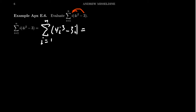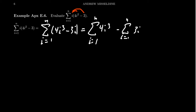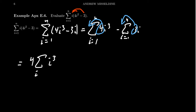We take the sum as i goes from 1 to n. Just like with derivatives, where you break a polynomial up into pieces, we can break this up into a difference: the sum of 4i³ minus the sum of 3i, each as i goes from 1 to n. We then factor out the constant multiples — factor out 4 and factor out 3 — because sigma is a linear operation. So we get 4 times the sum of i³ minus 3 times the sum of i, both as i goes from 1 to n.